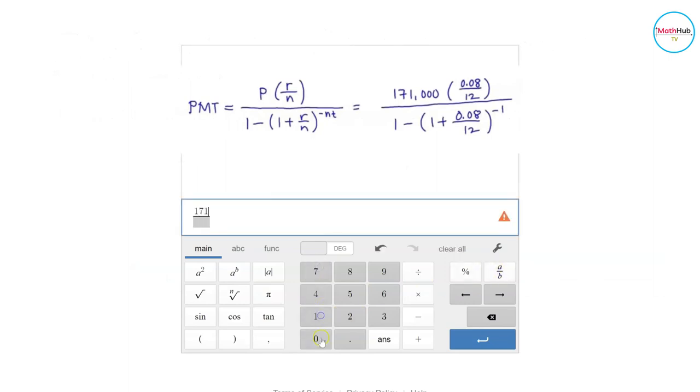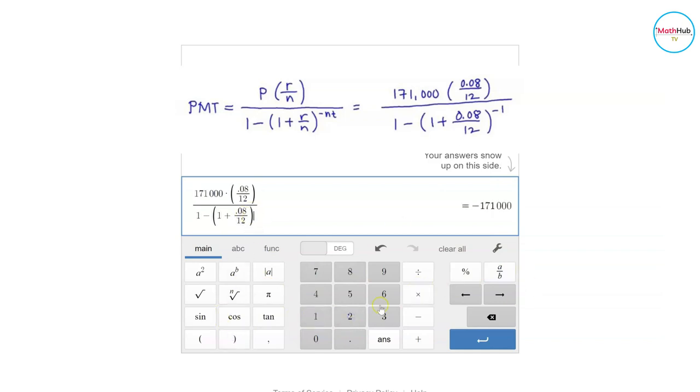Let's input the information on a calculator. 171,000 times 0.08 divided by 12 all over 1 minus parenthesis 1 plus 0.08 divided by 12.